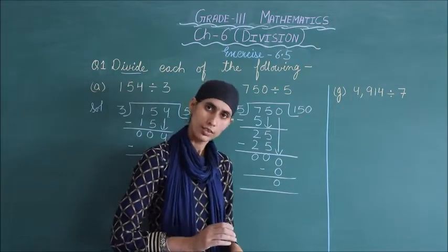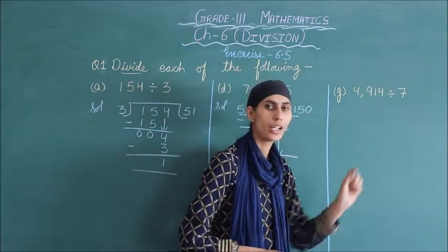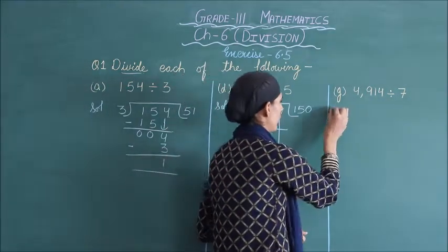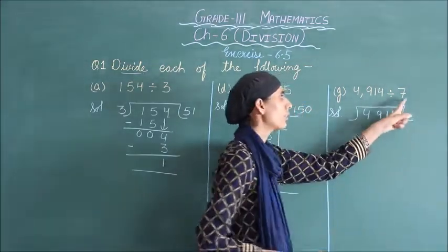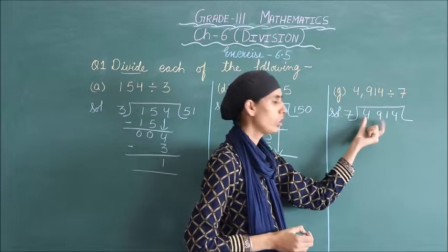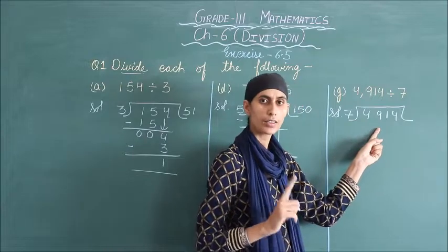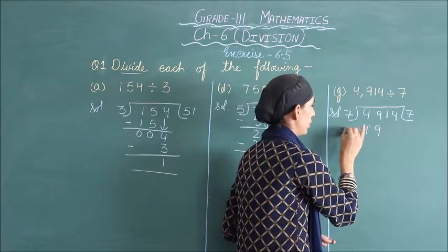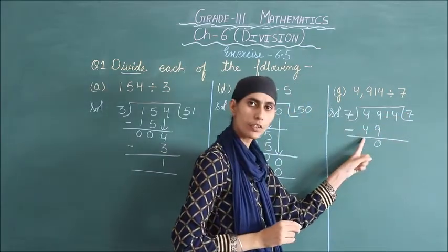Now come to part G. Here the dividend is a 4-digit number, but we follow the same division rules. Your solution: 4940 divided by 7. We check the first digit — 4 is smaller than 7, so we take two digits: 49. In the 7 times table, 49 comes at 7 times: 7 sevens are 49. Subtract: 9 minus 9 is 0, 4 minus 4 is 0.